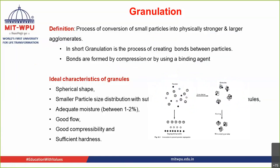Let us move to the ideal characteristics required from a granule. The granule should be spherical in shape. Granules usually have a somewhat starry shape, but what we expect is a very round, spherical shape. This spherical shape helps in better flowability of the granules. It should also have a smaller particle size distribution.